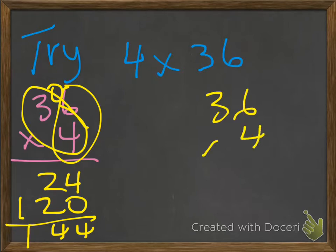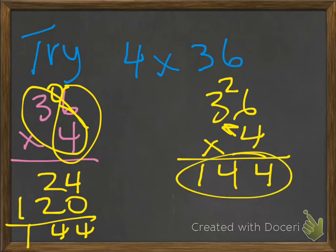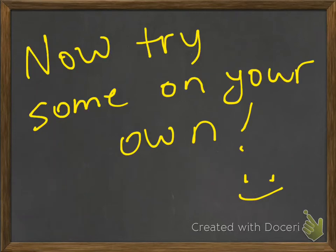If you do the standard algorithm, again, 6 times 4 is 24. 4 times 3 is 12 plus 2 tens, and we get the same answer. Either way works, whatever is easier for you. All right. Now try some on your own. Good luck.